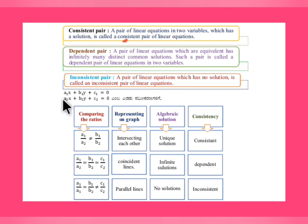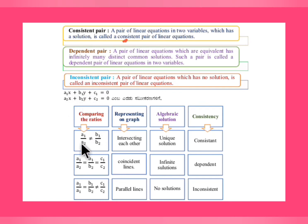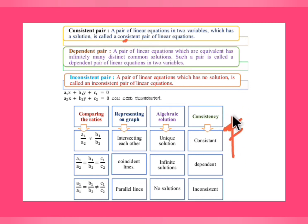For a pair of equations a1x + b1y + c1 = 0 and a2x + b2y + c2 = 0, compare the ratios. If a1/a2 ≠ b1/b2, the lines are intersecting each other on the graph — they are not equal so they intersect, crisscross each other, and they have a unique solution.